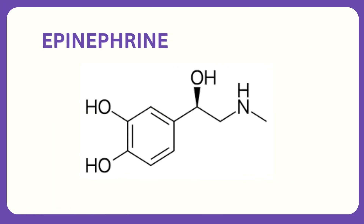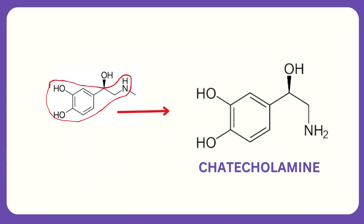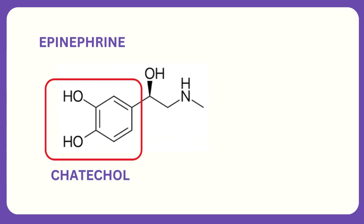The active functional group found in the structure of epinephrine is the catecholamine group. Epinephrine, also known as adrenaline, contains a catecholamine structure, which consists of a benzene ring with two hydroxyl groups attached to adjacent carbon atoms.